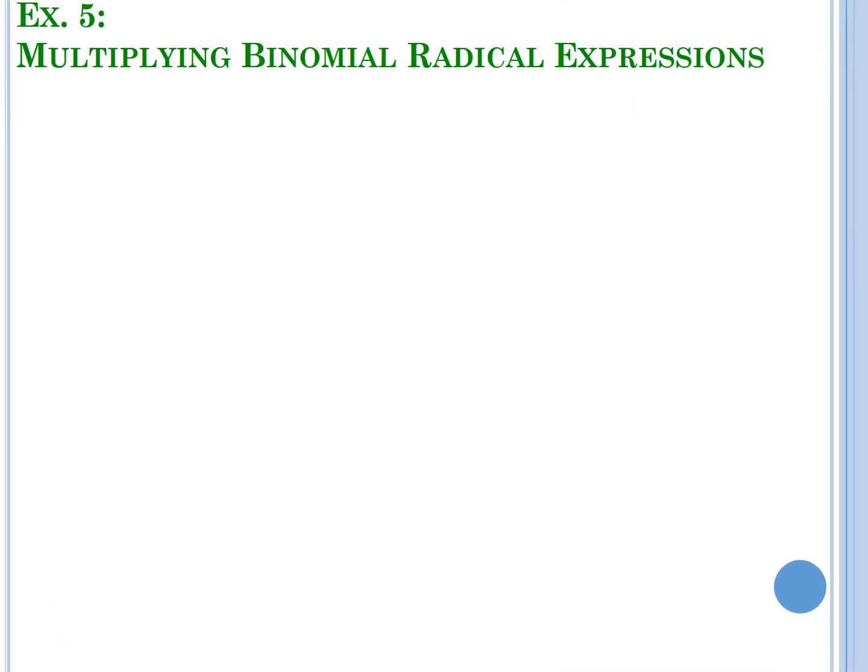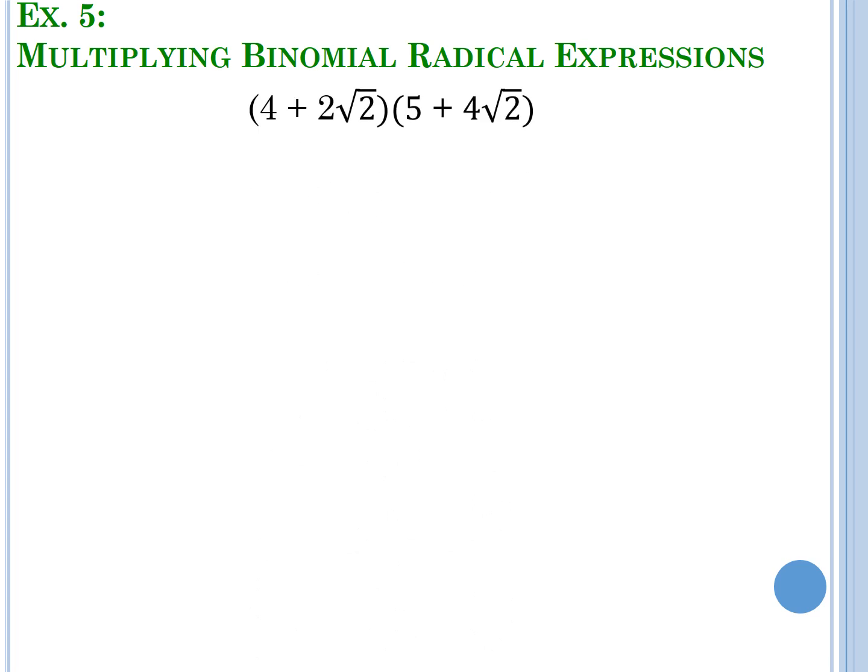On example 5, we're going to look at multiplying binomial radical expressions — multiplying a binomial times another binomial, where at least one term in each has a radical. Hint: you're going to use FOIL or the box method. So we have (4 + 2√2)(5 + 4√2). I chose to FOIL, but use whichever multiplication method works best for you.